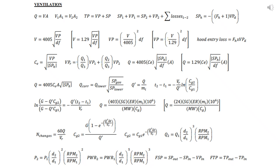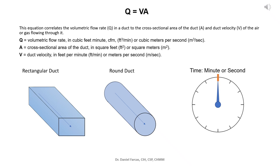The first equation is the volumetric flow rate in a duct. This equation correlates the volumetric flow rate Q in a duct to the cross-sectional area of the duct, A, and the duct velocity, V, of the air or gas flowing through it. The equation is Q equals V times A, where Q is volumetric flow rate in cubic feet per minute or cubic meters per second, A is the cross-sectional area of the duct measured in square feet or square meters, and V is the duct velocity measured in feet per minute or meters per second.